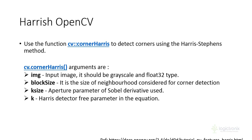Some applications of Harris Corner include image alignment, motion detection, object recognition, and object tracking. There is an OpenCV function for Harris Corner called cv2.cornerHarris. This function takes the following parameters: the input image, block size which is the neighborhood size to consider, and ksize which is the aperture parameter.